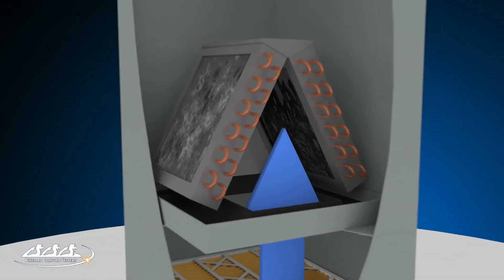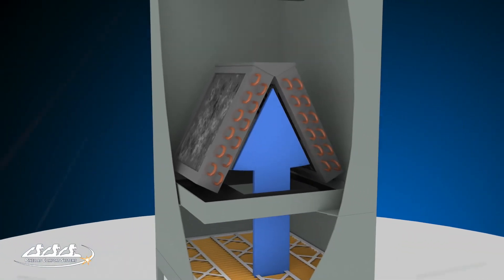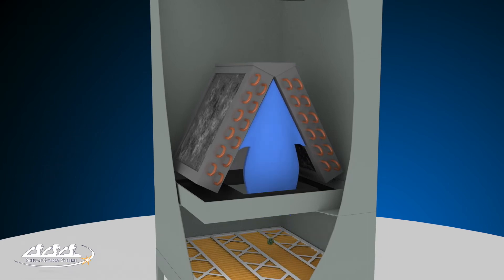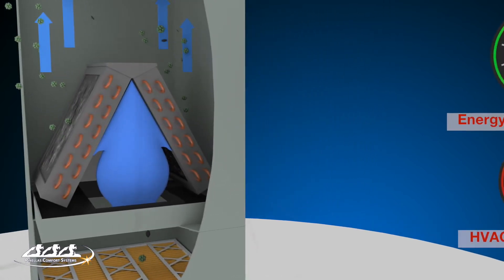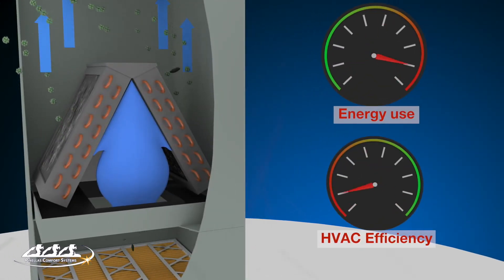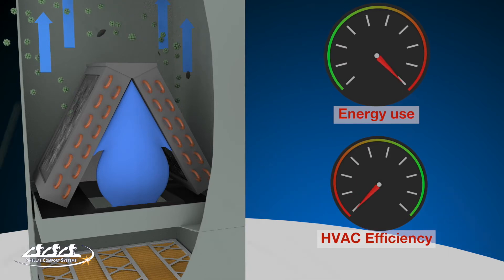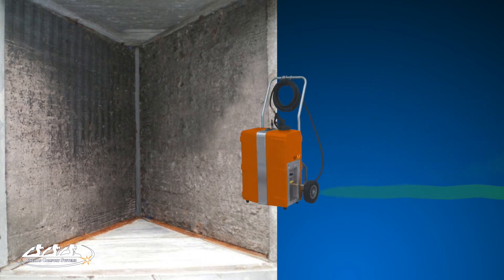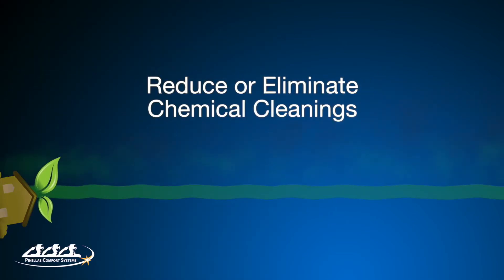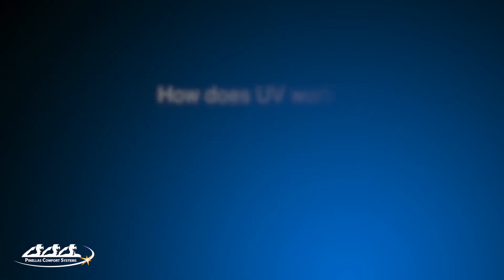A severely bio-clogged coil can cause excessive air resistance, and the insulating characteristics of the bio-growth reduces the thermal efficiency of the system. The result is the air conditioner works harder, increasing energy use and accelerating wear and tear. Clogged coils and drain pans periodically require expensive chemical cleanings, which are not good for the environment.